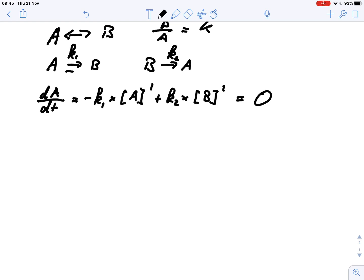So what we can do is we can rearrange this equation so that we put everything with A to one side, everything with B to the other side. So we've got k2 times B equals k1 times A.